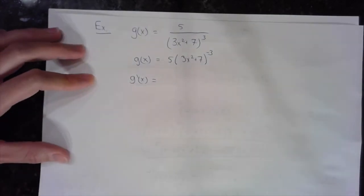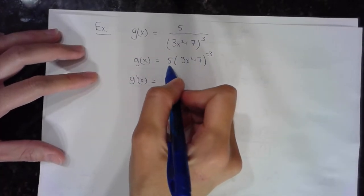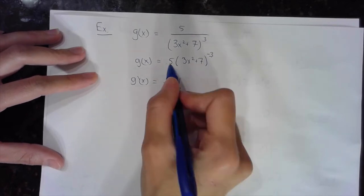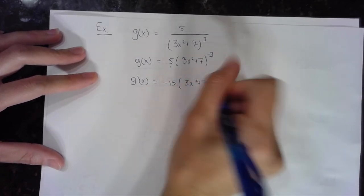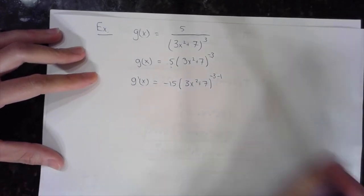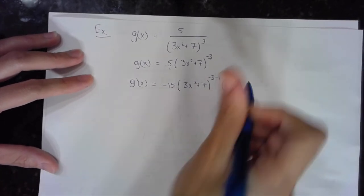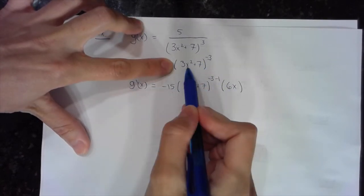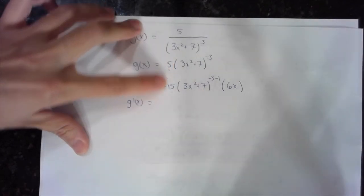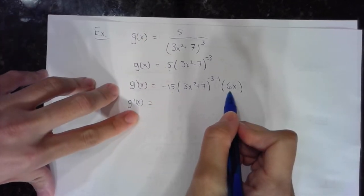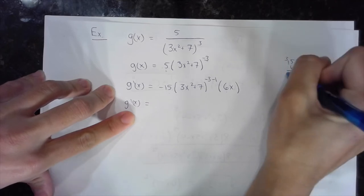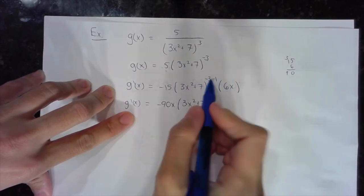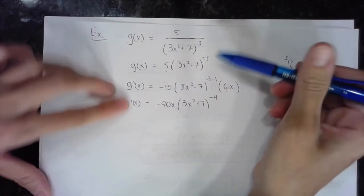Taking the first derivative g prime of x: I bring the exponent to the front. Because there's a 5 already, that negative 3 brought to the front gets multiplied by 5, giving me negative 15. I maintain the base (3x squared plus 7), subtract 1 from the exponent — negative 3 minus 1 — and multiply by the derivative of the base, which is just 6x. Simplifying: negative 15 times 6x gives negative 90x, and the exponent is negative 4. Be careful with negative exponents — when you subtract 1 you go deeper into the negative.